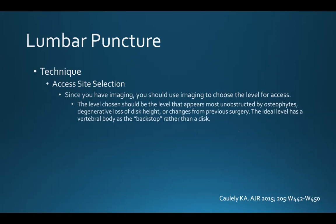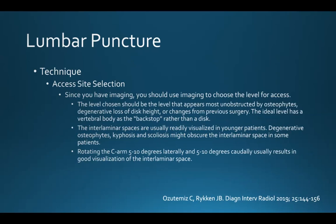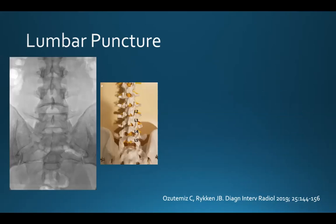Since you have imaging, use it to choose the level for access. The level chosen should appear most unobstructed by osteophytes, degenerative loss of disc height, or changes from prior surgery, and the ideal level has a vertebral body as the backstop rather than a disc. The interlaminar spaces are usually readily visualized in younger patients, but degenerative osteophytes, kyphosis, and scoliosis might obscure them in other patients. Rotating the C-arm 5 to 10 degrees laterally and 5 to 10 degrees caudally usually results in good visualization of the interlaminar spaces.